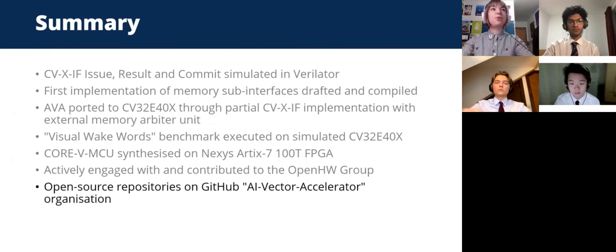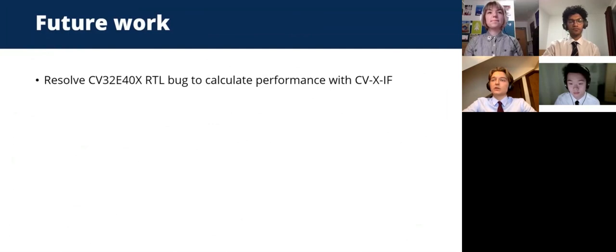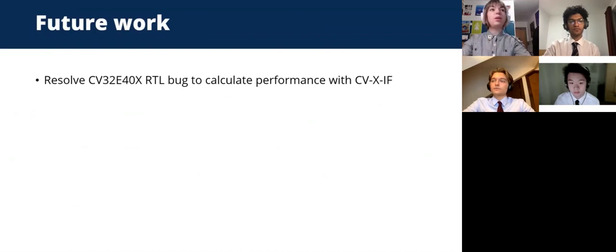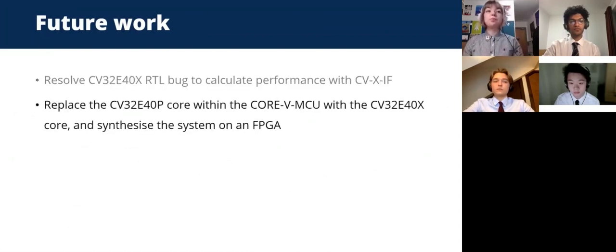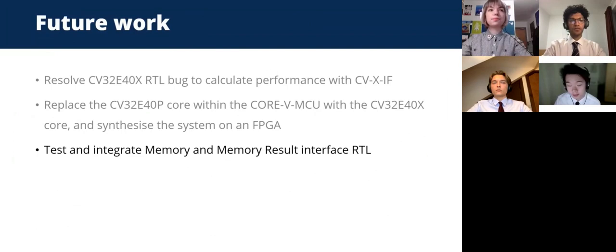There is always more to do. Our immediate next task will be to resolve the RTL issue preventing us from executing the benchmark on the accelerated E40X. Beyond that, further work would include running more benchmarks from the MLPerf TinySuite to test other neural network architectures or different inference workloads. The next step would then be to synthesize the system on the FPGA by replacing the P-core with the X-core within the Open Hardware Group's Core5MCU. Subsequently, we would test and integrate the memory and memory result interface RTL, completing the full implementation of the X interface, and then develop the conditional logic behind the commit interface for killing offloaded instructions as required.